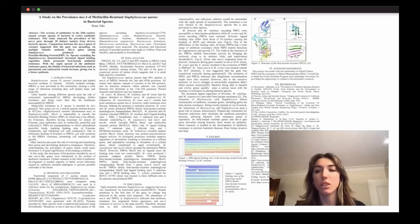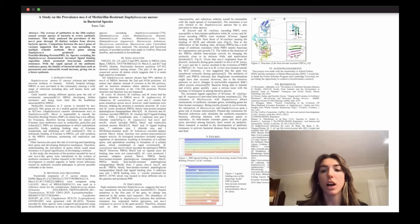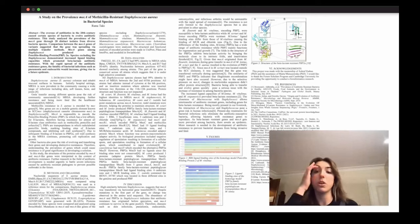So I want to move on to what I got from this study. High similarities between staphylococcus suggest that mecA was transferred by horizontal gene transfer. Despite the mutations in the first part of the gene, no change was observed in the amino acid sequence in the staphylococcus species. The abundance of mecA and PBP2A in staphylococcus indicates that the antibiotic resistance has originated before the speciation of staphylococcus and mecA continues to survive in the gene pool.